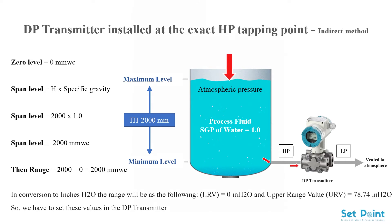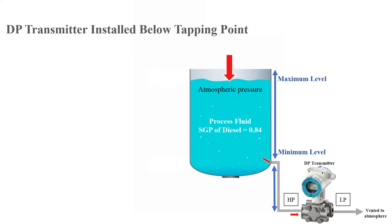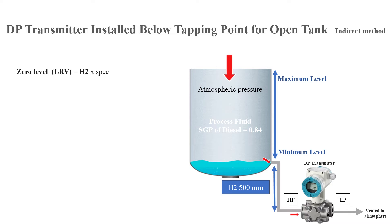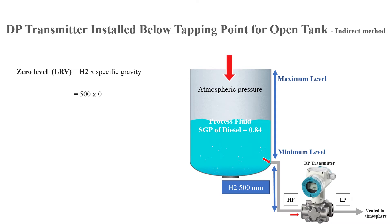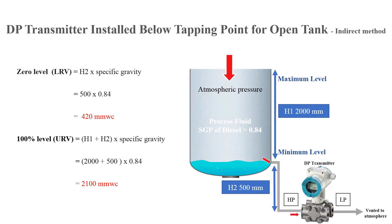DP transmitter installed below the tapping point for an open tank — indirect method. The calculation in this case: the zero level lower range value equals H2 multiplied by the specific gravity of the measured liquid, giving 420 millimeters water column. The upper range value equals (H1 plus H2) multiplied by the specific gravity of the measured liquid, giving 2100 millimeters water column.